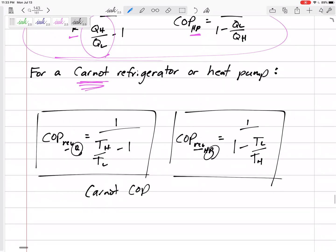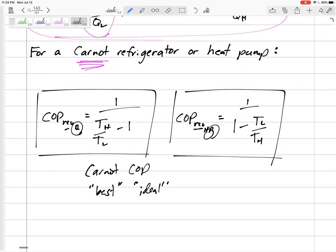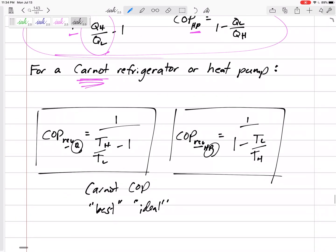Alright, so this is the Carnot COP. This is the COP if we know it's a Carnot refrigerator, if we're told it's a Carnot heat pump, or if we're told, hey, it is the best, the ideal, the maximum, the highest theoretical coefficient of performance that we could get out of any refrigerator and heat pump that could possibly be invented.